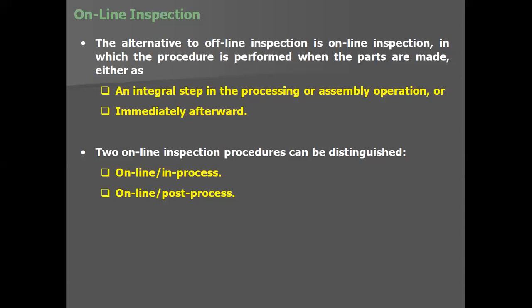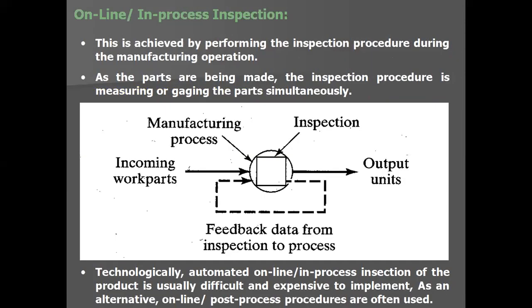There are two online inspection procedures: online in-process and online post-process. Online in-process is achieved by performing the inspection procedure during the manufacturing operation — as parts are being made, the inspection procedure is measuring or gauging the parts simultaneously. However, technologically, automated online in-process inspection is usually difficult and expensive to implement, so online post-process procedures are often used instead.